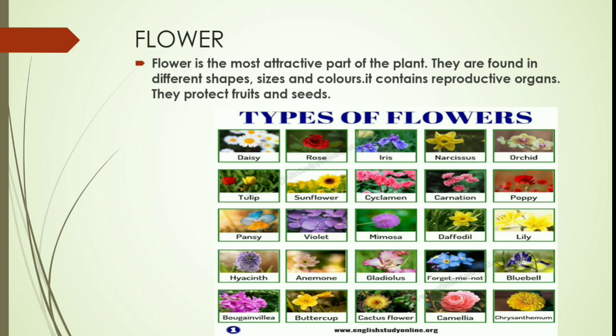Now if you see the given picture, there are different types of flowers shown here: rose which is red in color, orchids, lily, poppy, jasmine, violet, and many more. You can easily notice their different shapes, beautiful colors and structures as well.